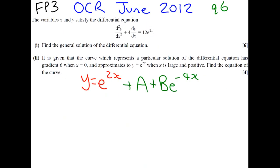The equation that we've found from part 1 represents a family of possible curves that satisfy the given differential equation. In part 2, it is given that the curve which represents a particular solution of the differential equation has gradient 6 when x equals 0. This is called a boundary condition. It is also given that y equals e to the 2x when x is large and positive.